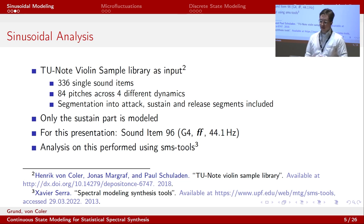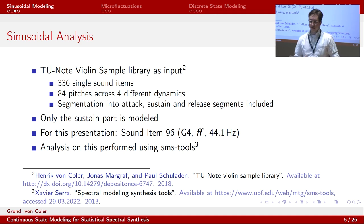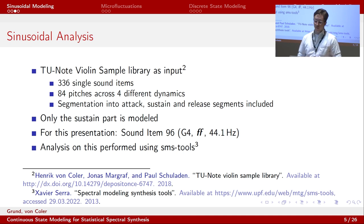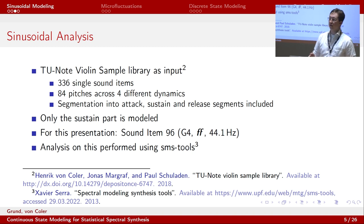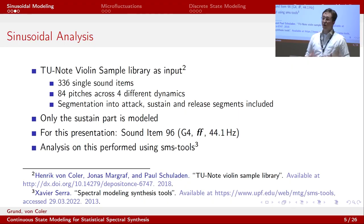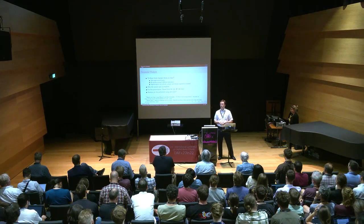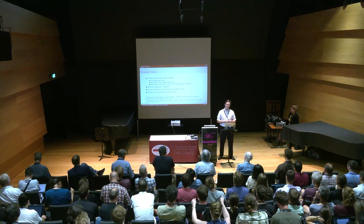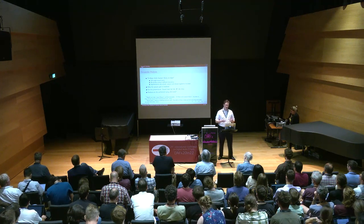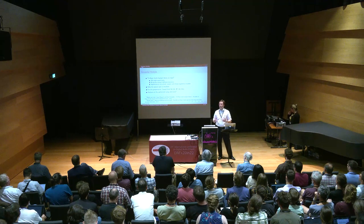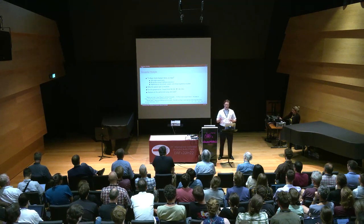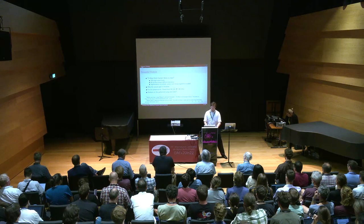As input for the analysis, we use the TU node violin sample library. It consists of 336 single-sound items as well as 344 two-note items and solo phrases, with the single sound items spanning 84 individual pitches across four different dynamics, from pianissimo over mezzo-piano to fortissimo. The library also contains timestamps for segmentation of the sound items into attack, release, and sustain phases. For the examples used in this presentation, we will use only the sustained part of sound item 96, which is a G4 in fortissimo.